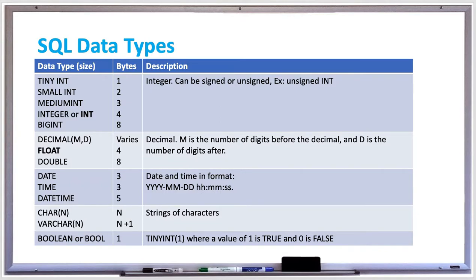When you create a database table, all the columns need to be assigned to a specific data type. The most common data types include INT or INTEGER for whole numbers, and FLOAT or DOUBLE for floating point numbers.